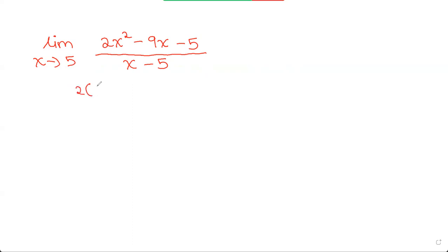The first thing we do is plug 5 into this. So 2 times 5 squared minus 9 times 5 minus 5 divided by 5 minus 5. So 5 squared is 25, 25 times 2 is 50. 50 minus 45 minus 5, that is 0. The denominator is also 0.